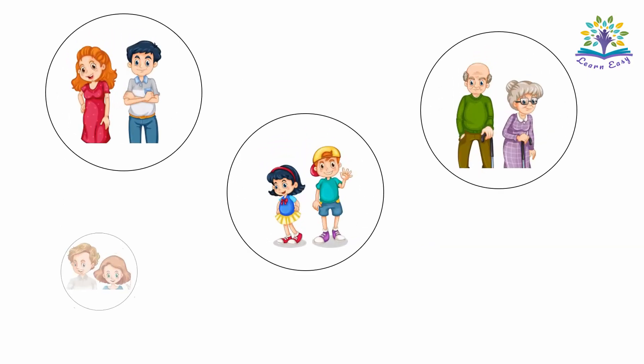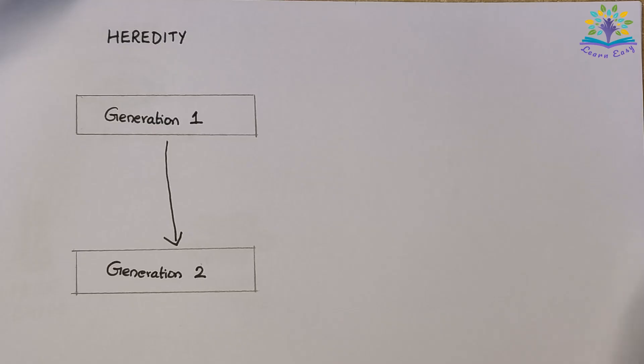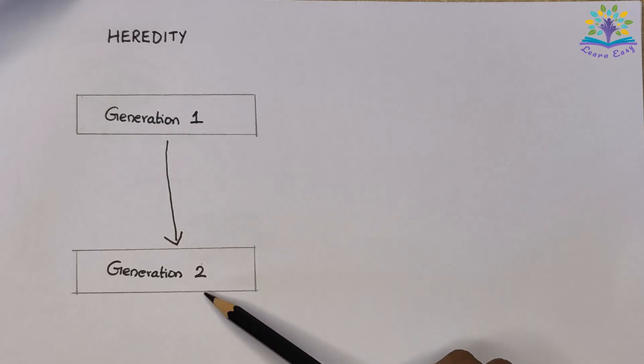You might have noticed some similarities in features with not just your parents and siblings, but with grandparents, uncles, aunts, and some with your cousins too, right? This is because we inherit features from our common ancestors.